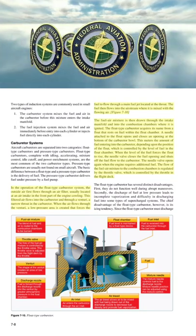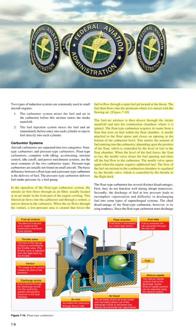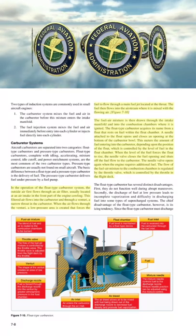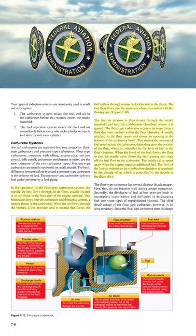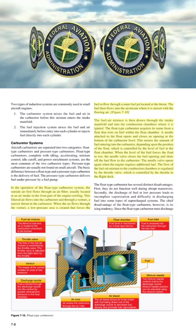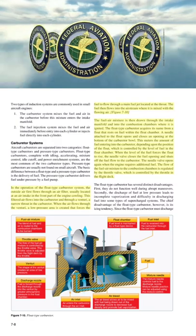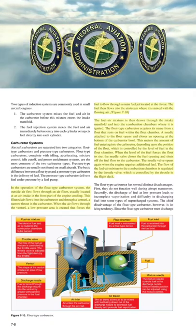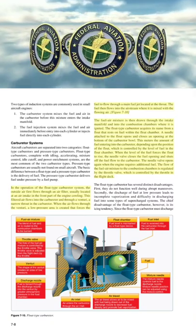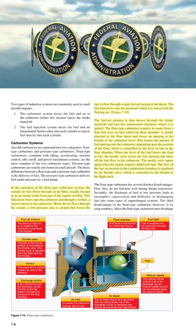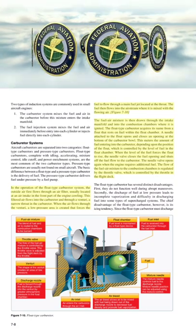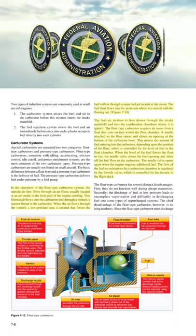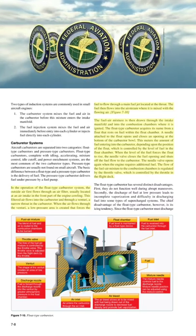In the operation of the float type carburetor, outside air flows through an air filter and into the carburetor through a venturi — a narrow throat. When the air flows through the venturi, a low-pressure area is created that forces the fuel to flow through a main fuel jet at the throat. The fuel then flows into the airstream where it is mixed with the flowing air, and the fuel-air mixture is drawn through the intake manifold into the combustion chambers where it is ignited. The float type carburetor acquires its name from a float that rests on fuel within the float chamber; a needle attached to the float opens and closes an opening to meter the amount of fuel entering the carburetor.